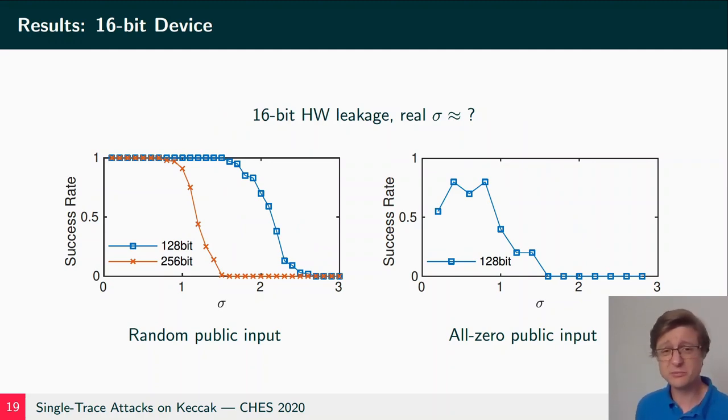Now for 16-bit Hamming weight leakage, we didn't have a reference device, we don't have a real sigma, but we can also see that it still works, especially in the random public input. On the all-zero public input, it only works with 128-bit secrets, so no 256-bit secrets, and the success rate never reaches one in action.